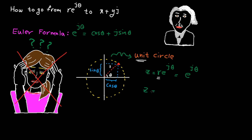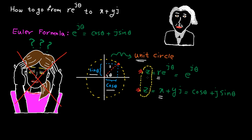And if we draw a line perpendicular to the y axis, this is sine theta. The red point can also be expressed in Cartesian format — real part plus imaginary part. The real part is cosine and the imaginary part is sine. Since both polar and Cartesian are presenting the same point, they must be equal. The conclusion is: e to the power of j theta is equal to cosine theta plus j sine theta.